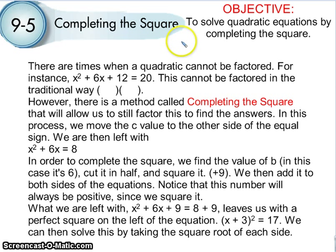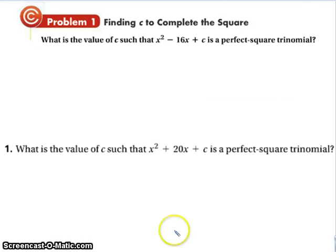It's really just three steps. You're going to be able to solve quadratics by completing the square. So let's look at one. What is the value of C that makes this a perfect square trinomial?